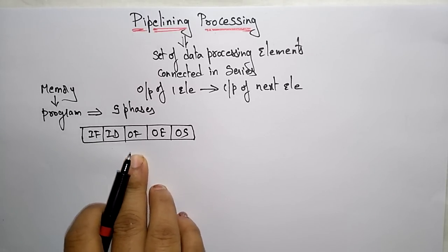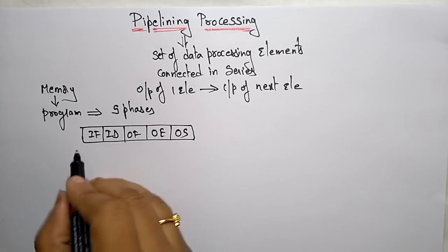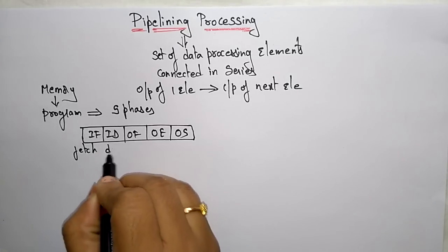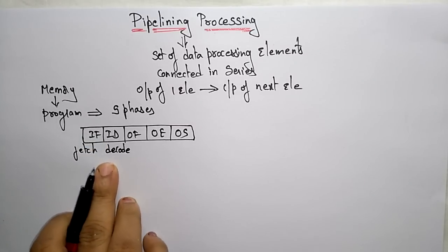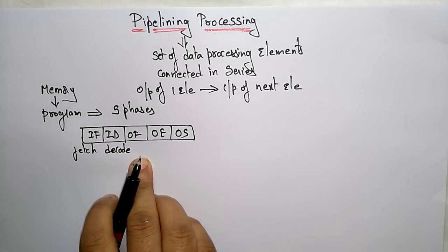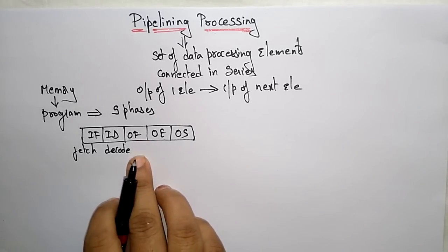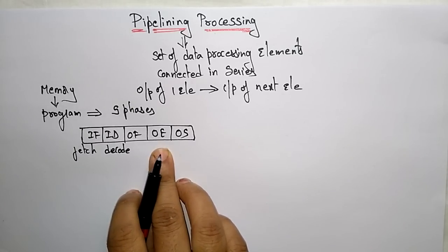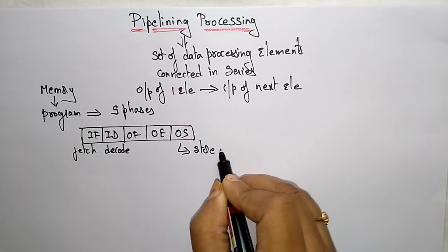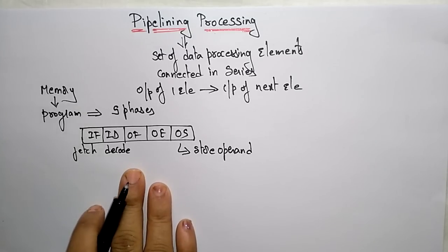These are the five phases that take place when an instruction is executing in the processor. First, we fetch the instruction from memory. After fetching, we decode that instruction. After decoding, we fetch the operand — the data that the instruction requires. After fetching the operand, we execute it, and finally we store the operand. These are the five phases while a program or instruction is executing in the processor.